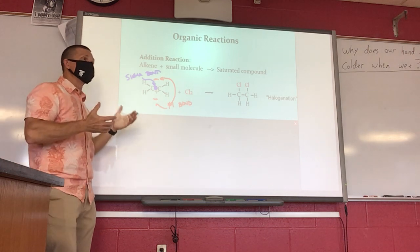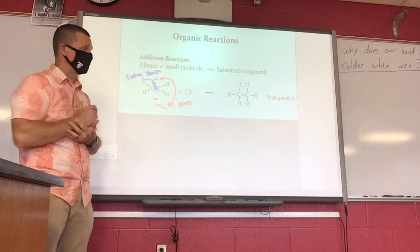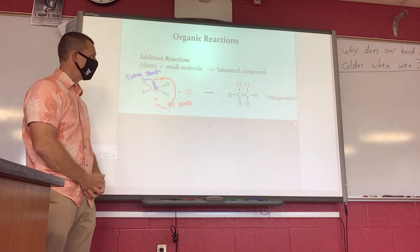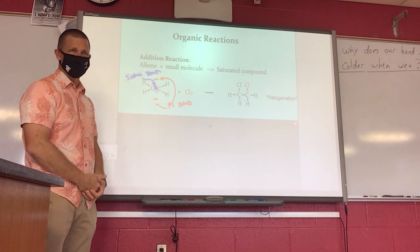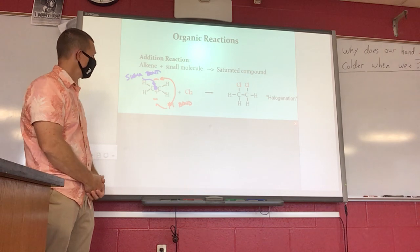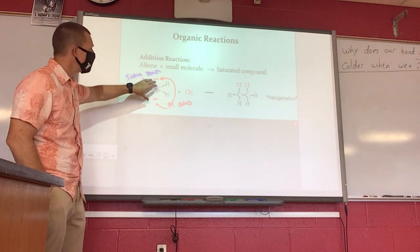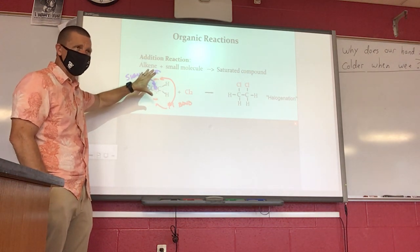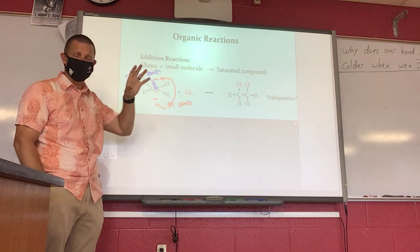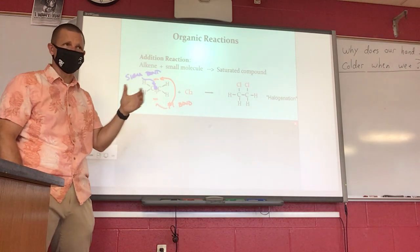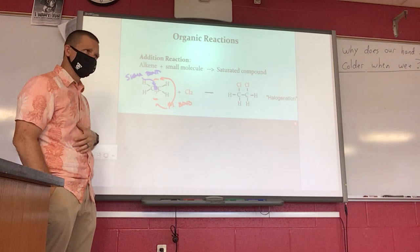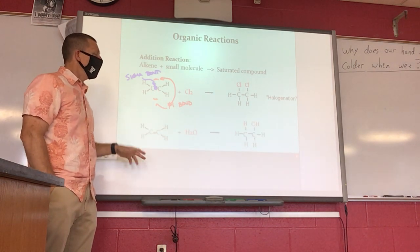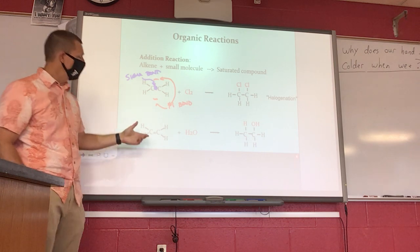An addition reaction does not necessarily have to be a halogenation — other things can add on. To summarize: in addition reactions, you have to start with an unsaturated compound; the pi bond electrons are vulnerable, and that's what makes it happen.